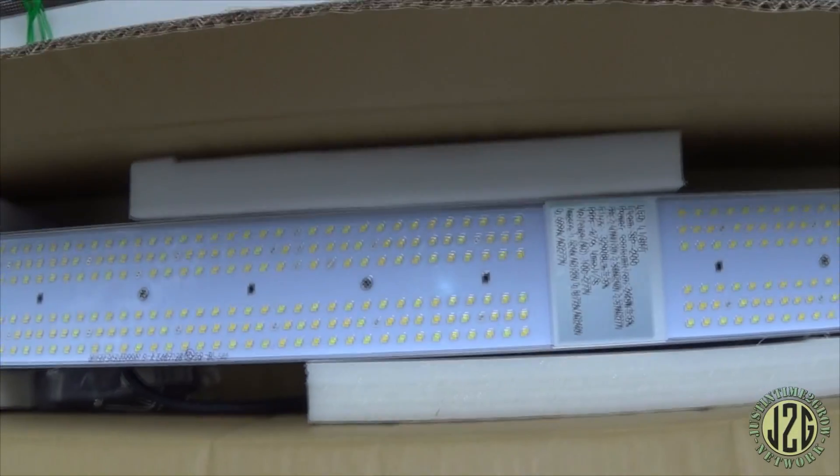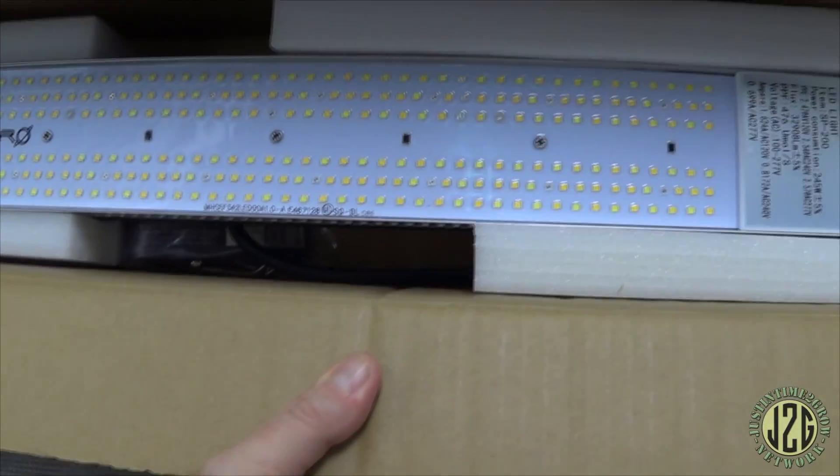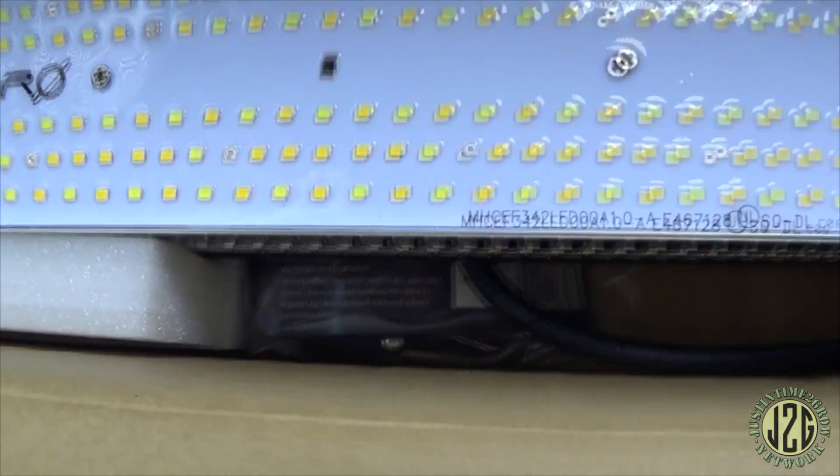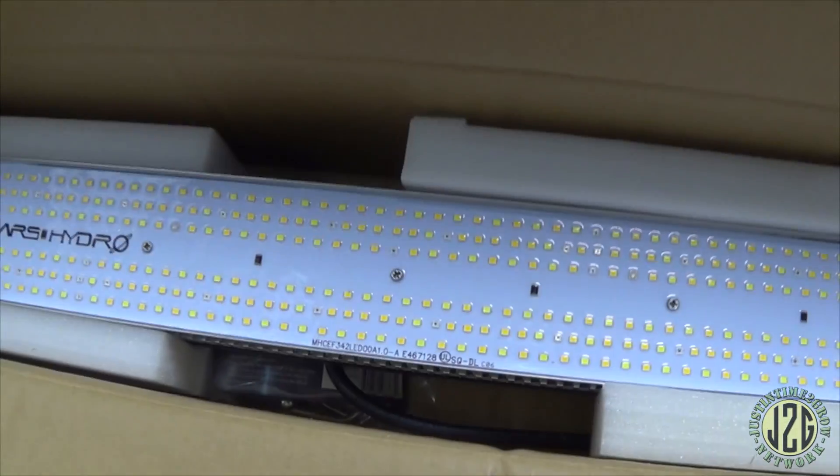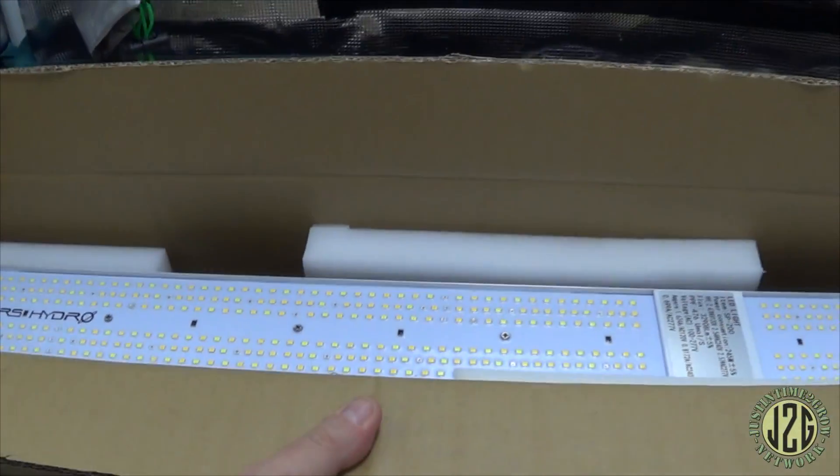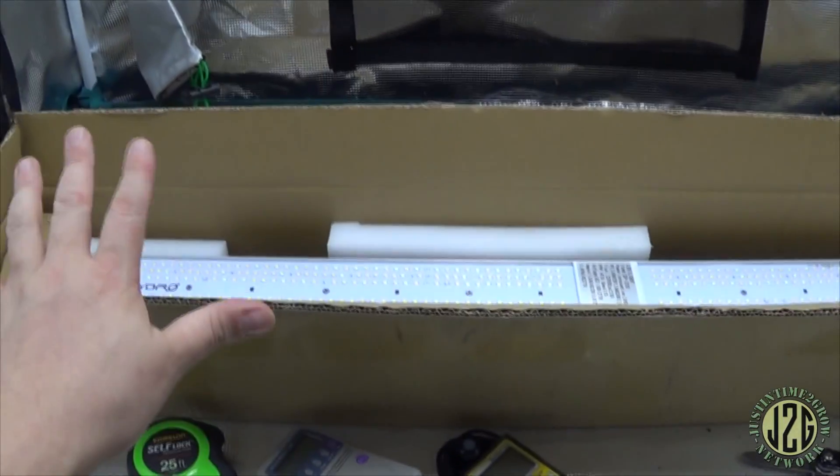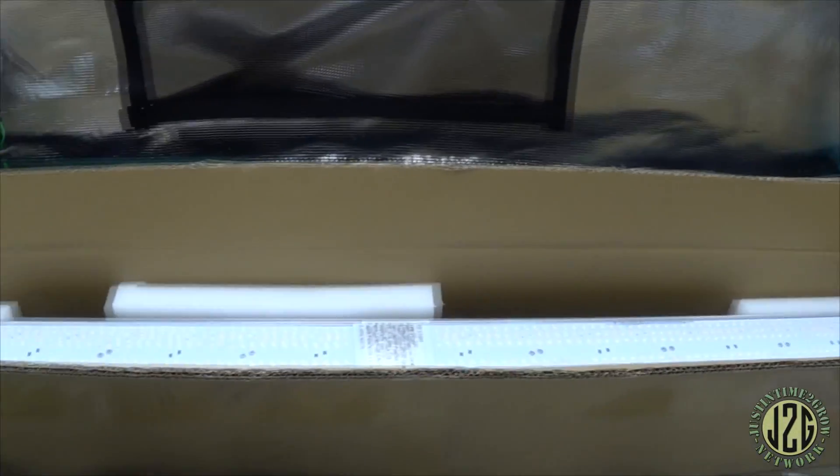Yeah, I don't think there's a whole lot else in the box besides power cord. Oh no, looks like there's some rope ratchets in there, but I'll have to pull the light out to get to them. So let me get rid of the box here and I'll get the light going.